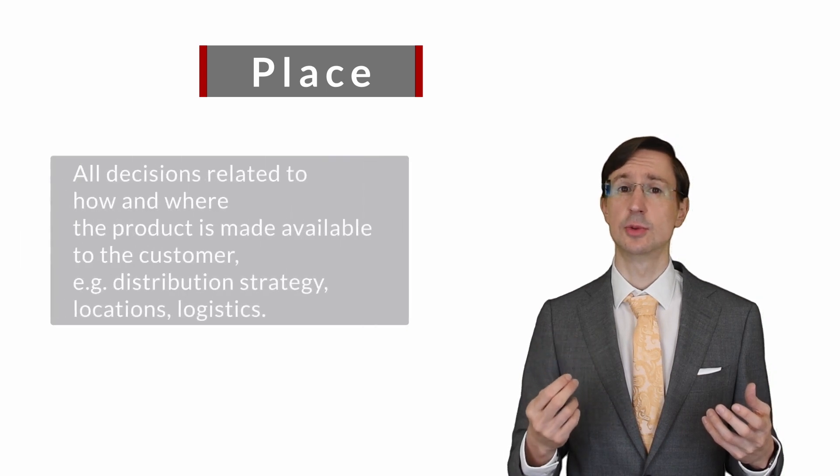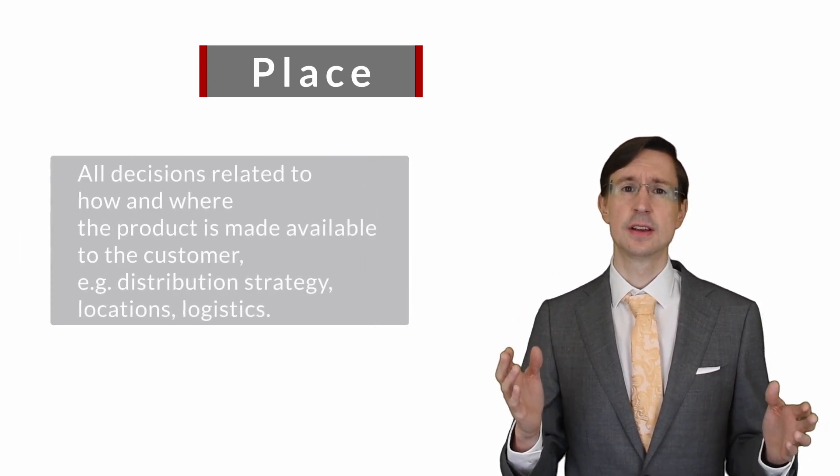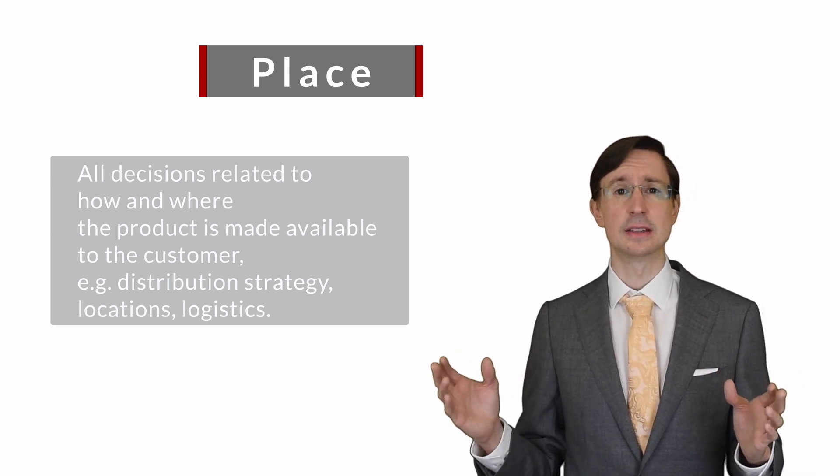Place affects all decisions related to the distribution of a product. A distribution channel bridges the gap in time and space between supply and demand to make the product available when the consumer wants it.